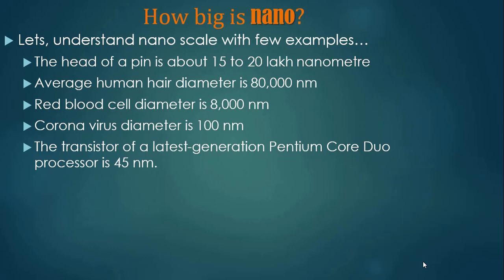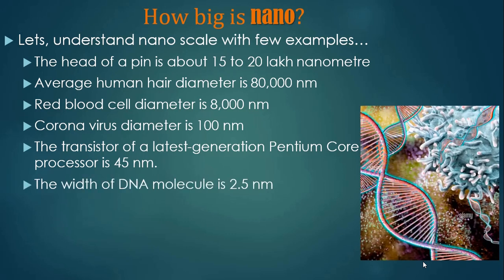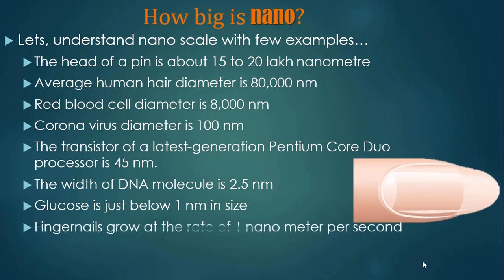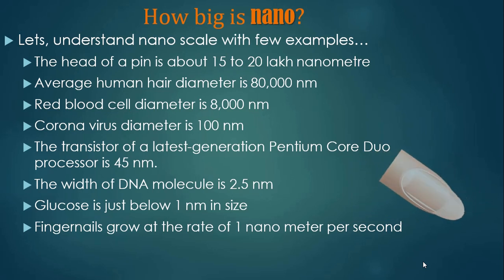Other examples are natural nanomaterials. The width of a DNA molecule is 2.5 nanometers. Glucose is just below 1 nanometer in size. Our fingernails grow at the rate of 1 nanometer per second. Now you can imagine how small the nano scale really is.